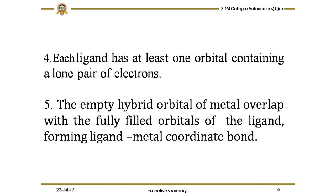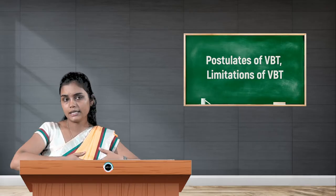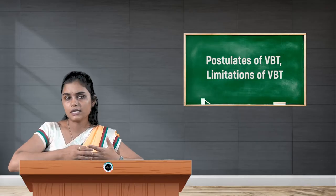In simple terms, there must be a vacant orbital on the metal that can accommodate or accept the pair of electrons donated by the ligand. These are the five different postulates of VBT.